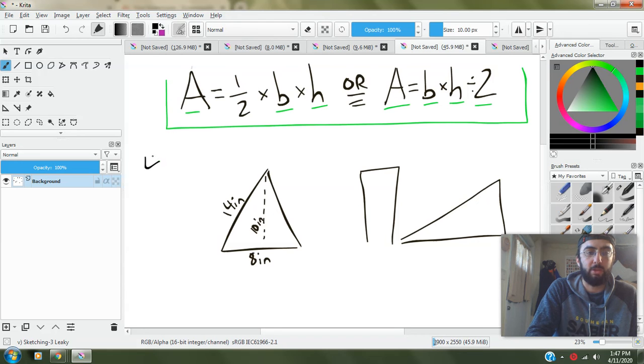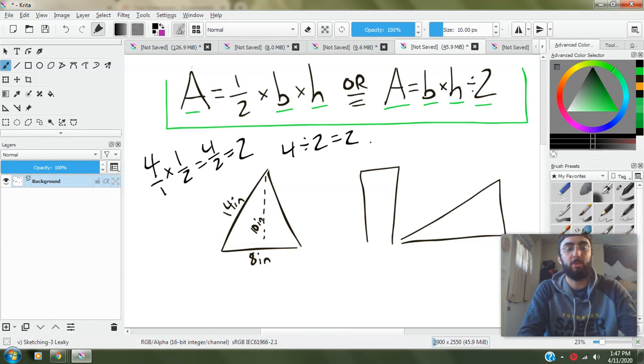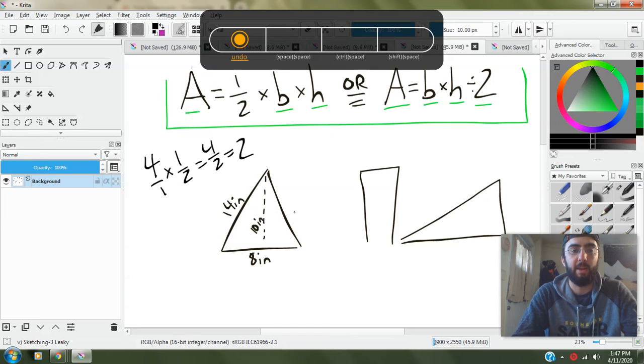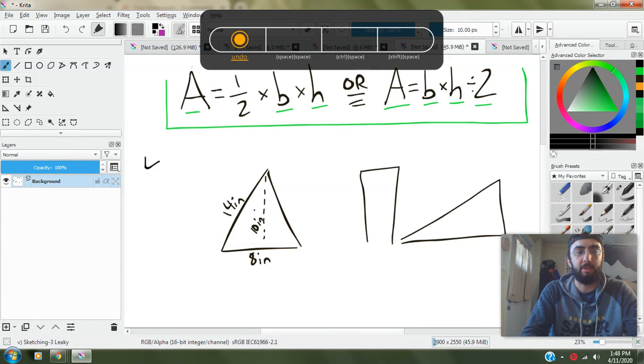So just a quick example. Four divided by two, we know is two, but let's say four times one half equals four over two, which would then be two. Four divided by two equals two. So that's just one small little thing that one half, multiplying by a half or dividing by two is the same result.